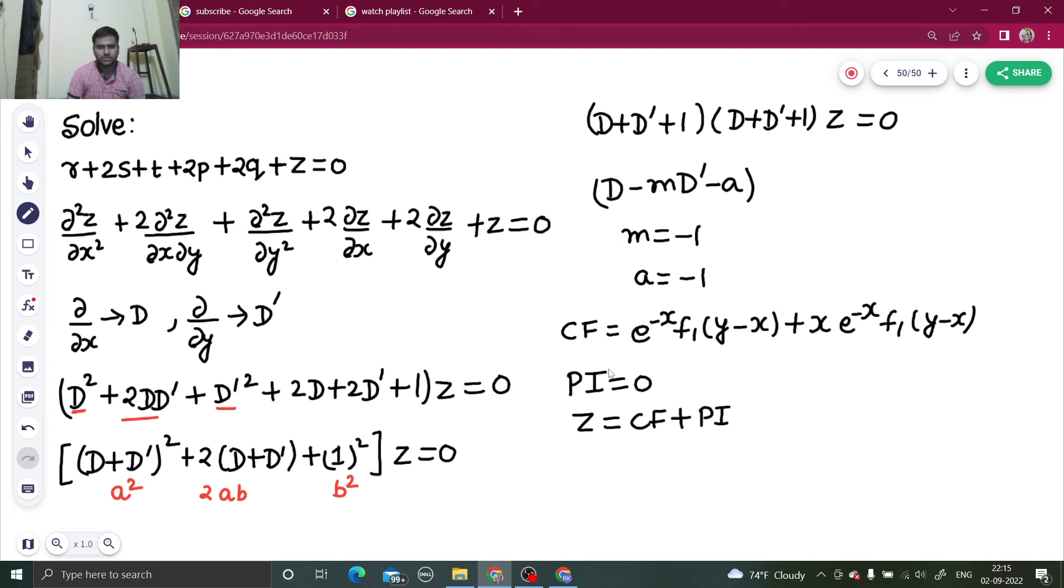z will be equal to e power minus x f1 of y minus x plus x times e power minus x f2 of y minus x.